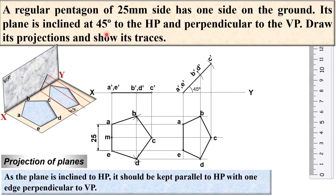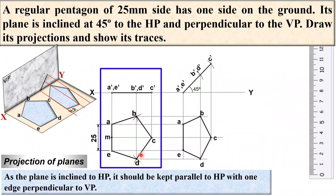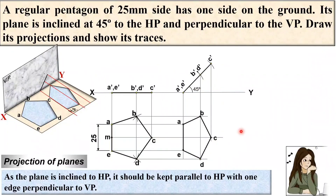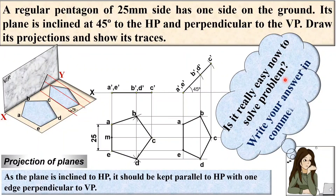There is no inclination given to the VP, so two stages are enough for this problem. In the examination, draw only the dark top view and front view from the last stage. If you have time you can also draw the first and second stage lightly. Keep the remaining construction work as light as possible. If you have any questions, write in the comment box. Thanks for watching — please press the like button to appreciate it.